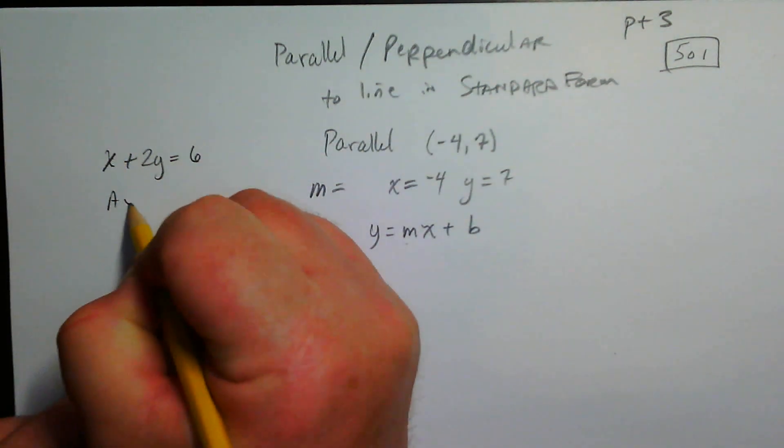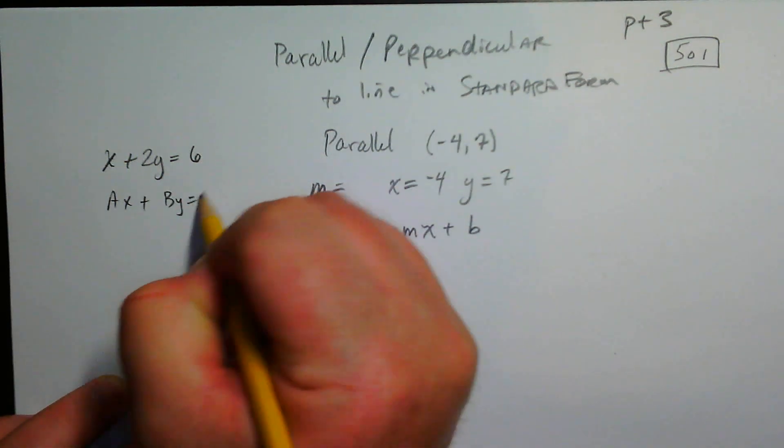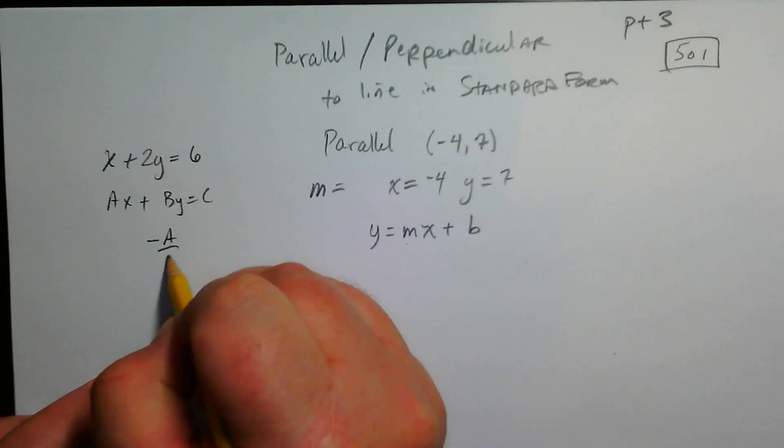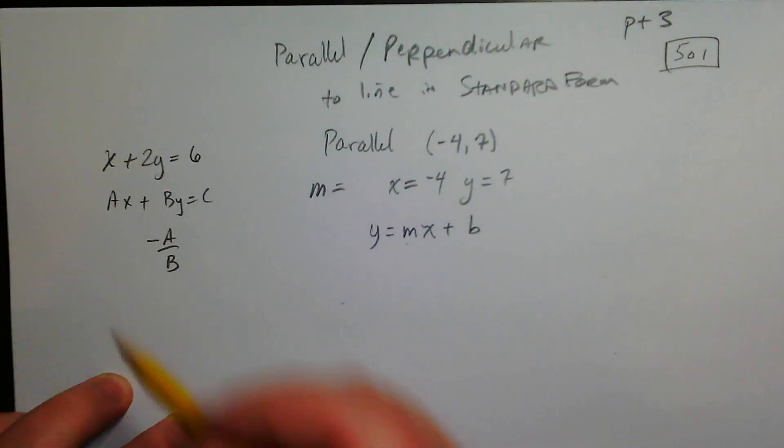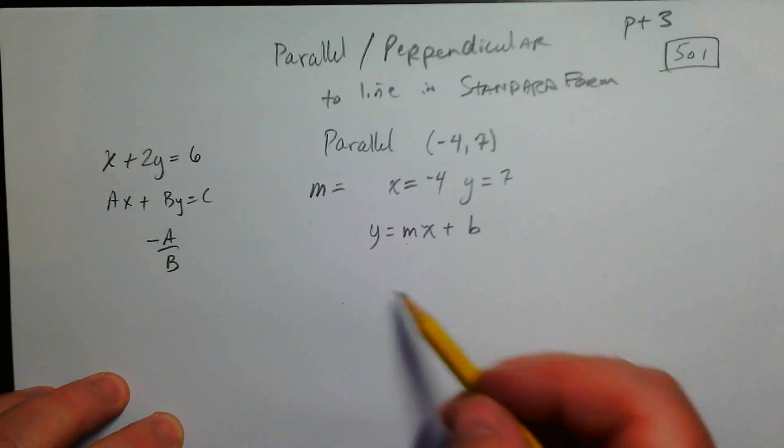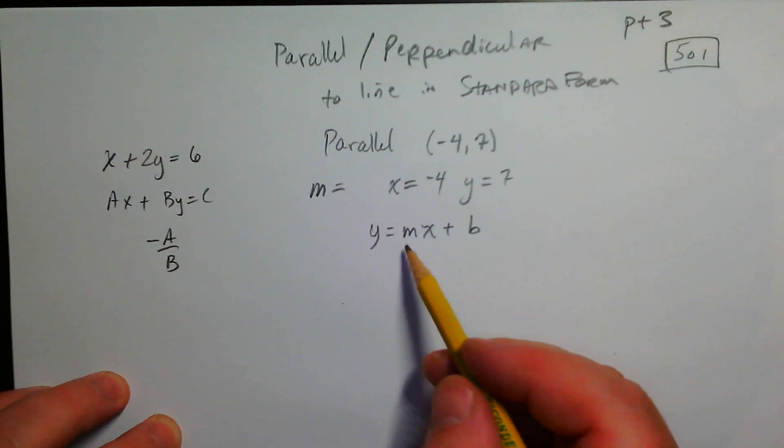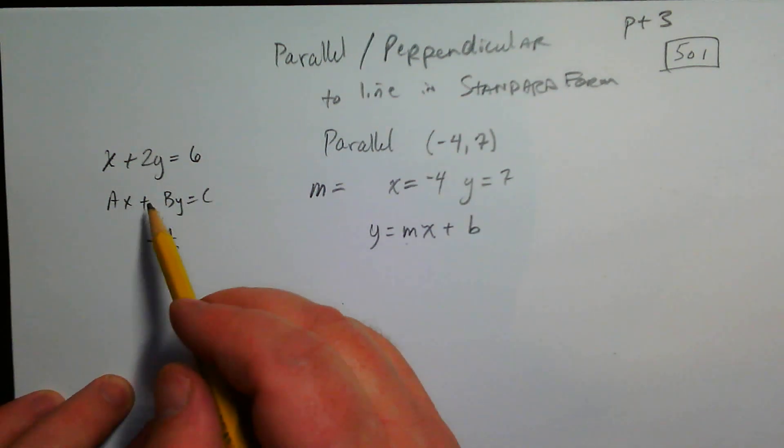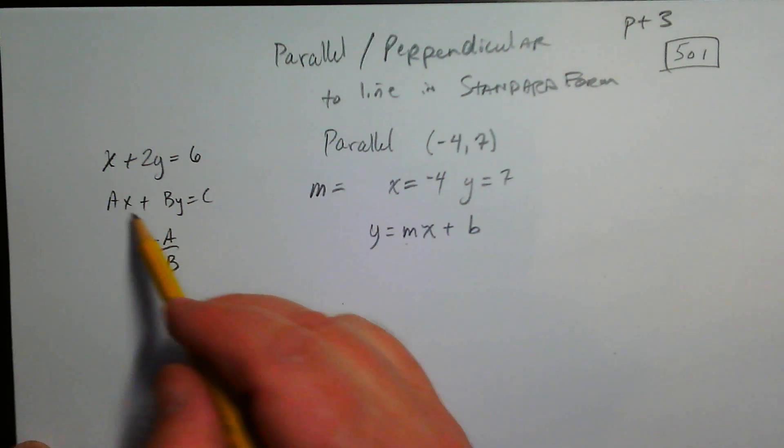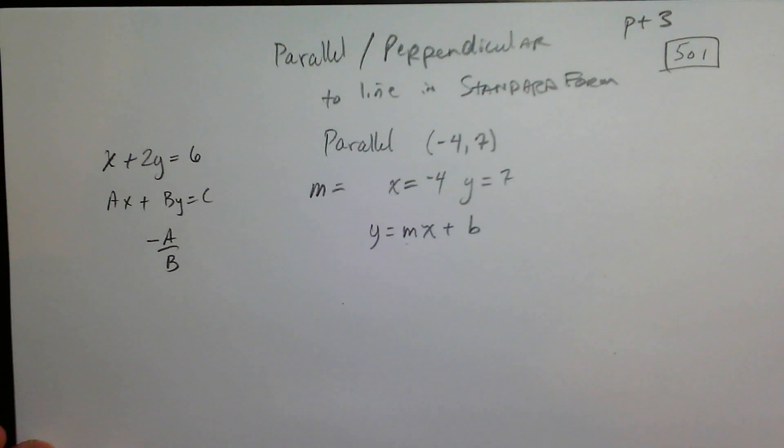We need the slope from this thing right here. So there's a shortcut. This is standard form: Ax plus By equals C. The slope is going to be negative A over B. It's not A. People a lot of times are tempted to say it's just A because in slope-intercept form, the coefficient of x is the slope. But this is not slope-intercept form. So it's negative A over B. The reason why is that you solve for y. You would subtract this first, which would make A negative, and then you divide by B.